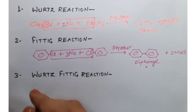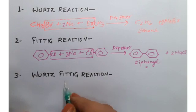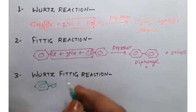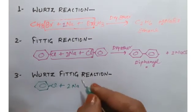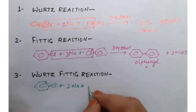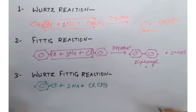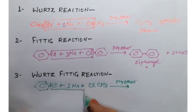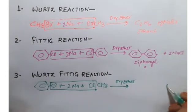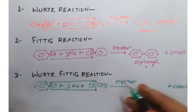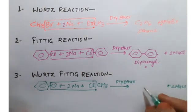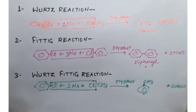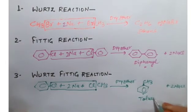Next is Wurtz-Fittig reaction. Here, haloarene reacts with haloalkane — like chlorobenzene (haloarene) reacts with sodium metal together with methyl chloride (haloalkane) in presence of dry ether. Again two molecules of NaCl are formed as byproduct, and what is left is a ring with CH3 — alkylbenzene is formed — and its name is toluene.